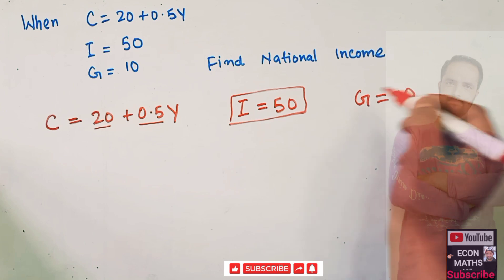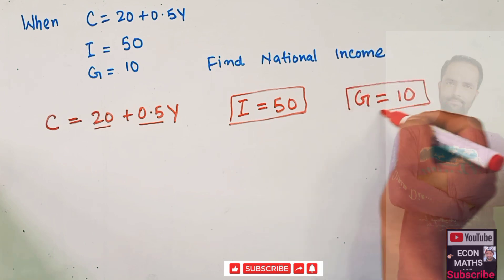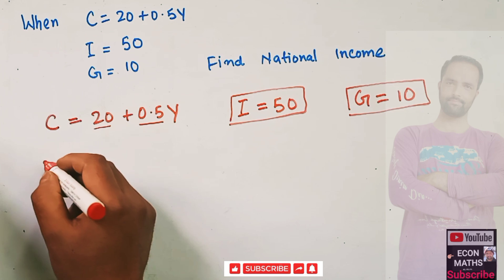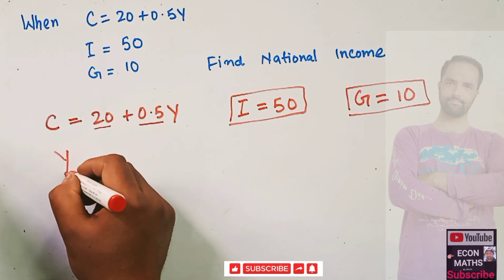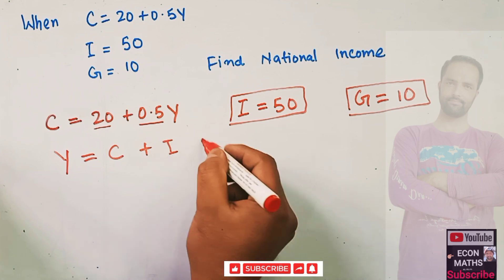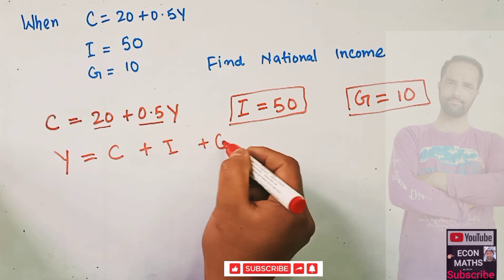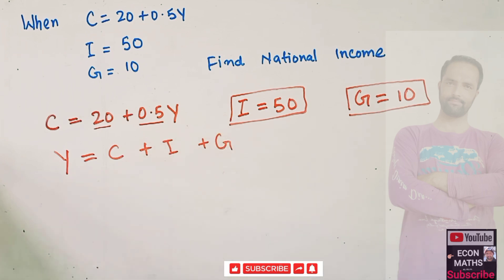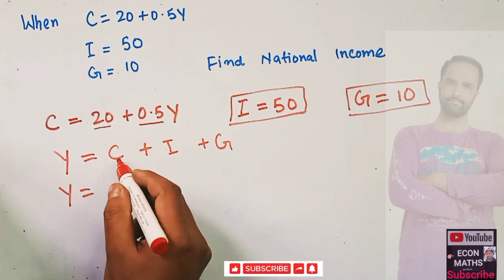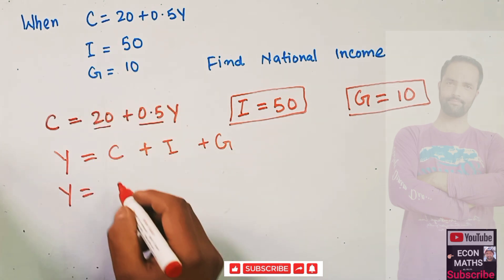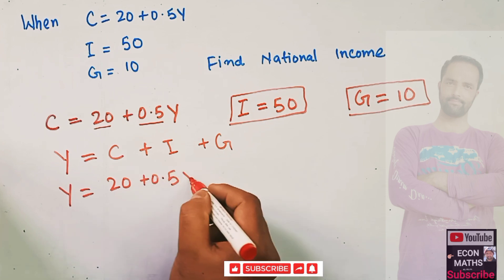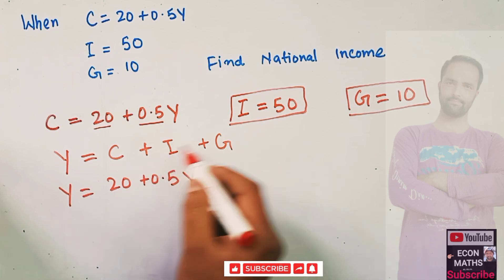G is our autonomous government expenditure. To calculate national income, Y is equal to C plus I plus G. When we add up these expenditures it should be equal to Y.